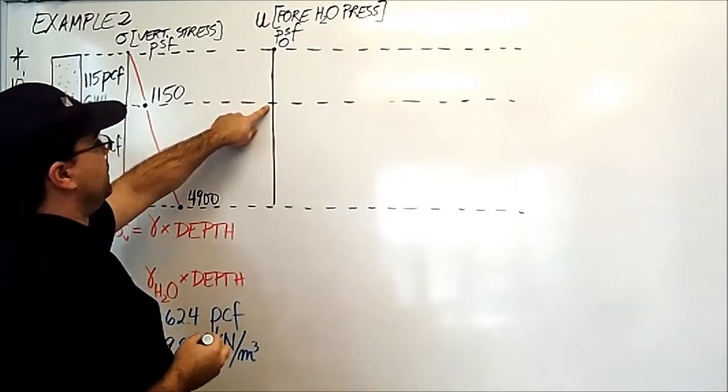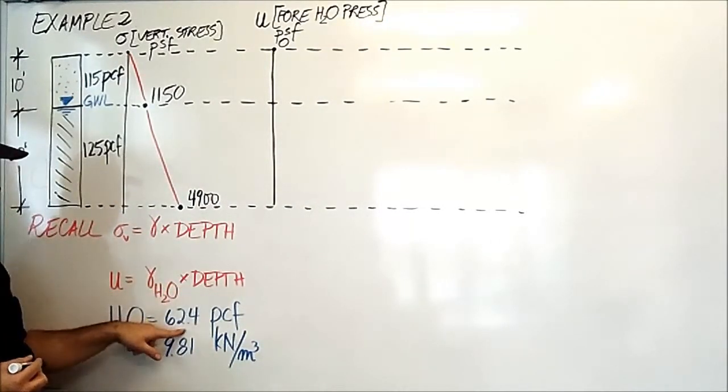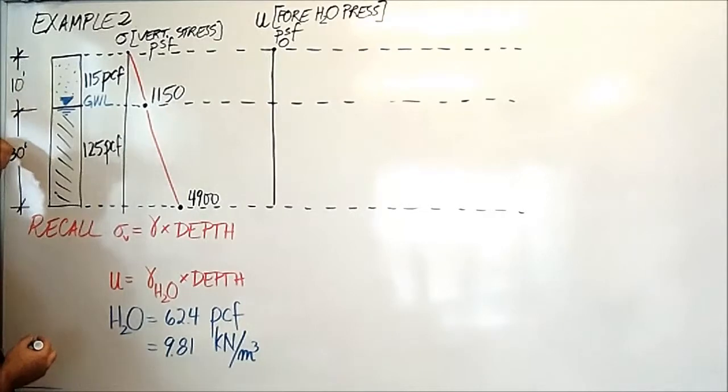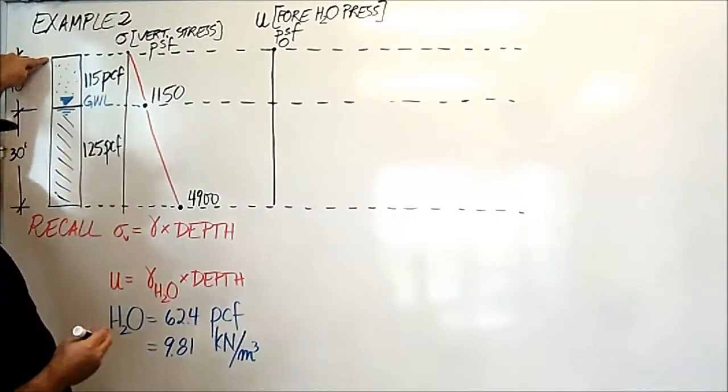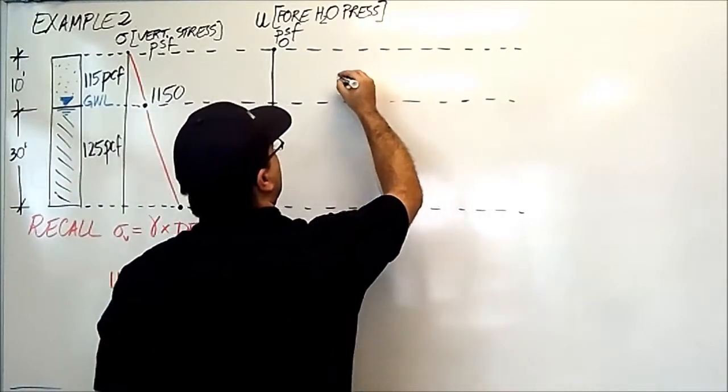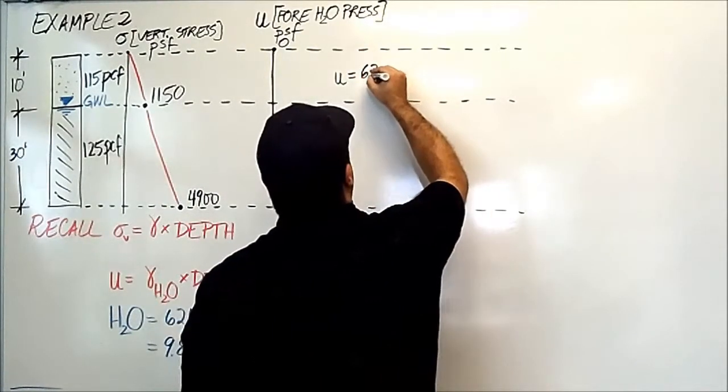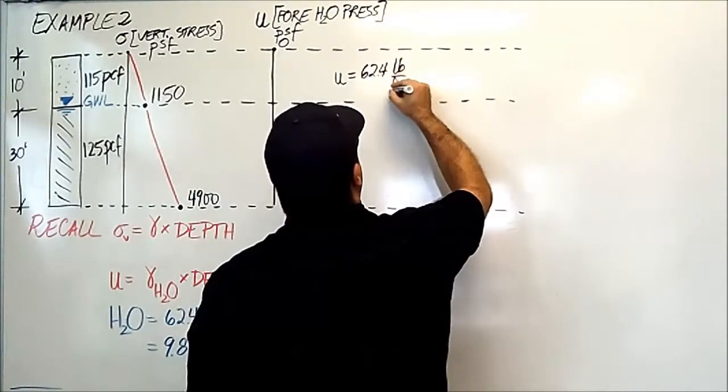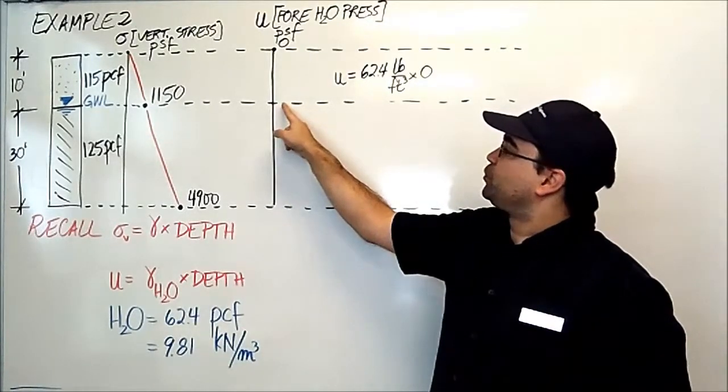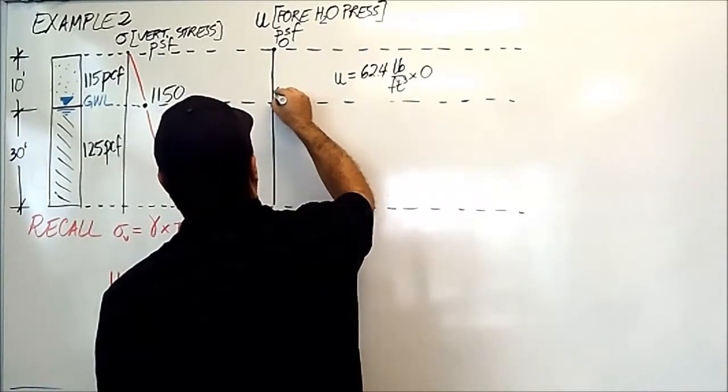We go all the way down to here, the first interface. If we use this formula, the density of water times the depth, the density of water is this, but there is no water above. The water only starts at 10 feet and below, so above it it's nothing, so there is a depth of zero. So I'm going to write down the calculation and then erase it. The calculation of the stress here is U equals the density of water, 62.4 pounds per cubic feet, times the depth of zero. There is no water above this line. So the pore pressure here is zero.